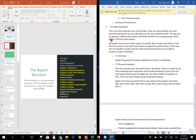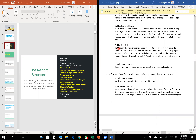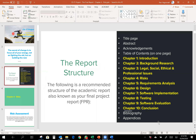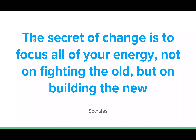Now that we've gotten that out of the way, let's look at what Ghani says about risk. He says: talk about the risk the project faces; don't make it very basic — talk about proper risk that could have contributed to the failure of the project. As always, if you're unsure, read about it. This section I'm going to do now will focus in greater detail on the risks associated with your project.